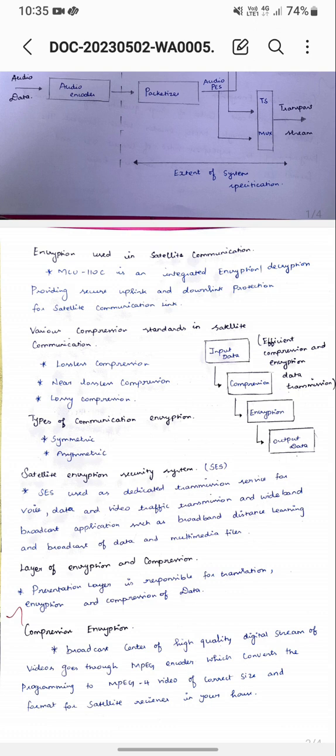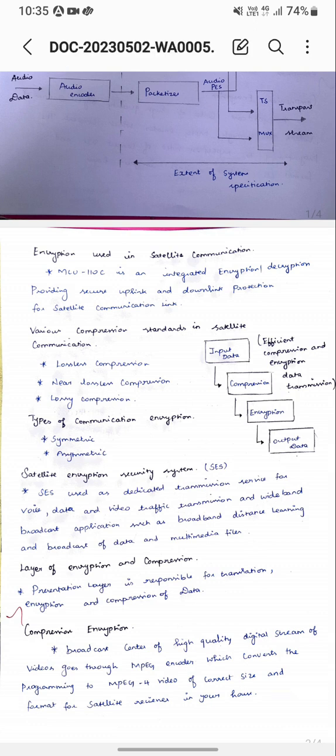An example of asymmetric encryption is elliptic curve cryptography. The satellite communication security system is a dedicated transmission service for video data and video traffic transmission and wideband broadcast applications, such as broadband distance learning and broadcast data multimedia files, with layers of encryption and compression at the presentation layer.